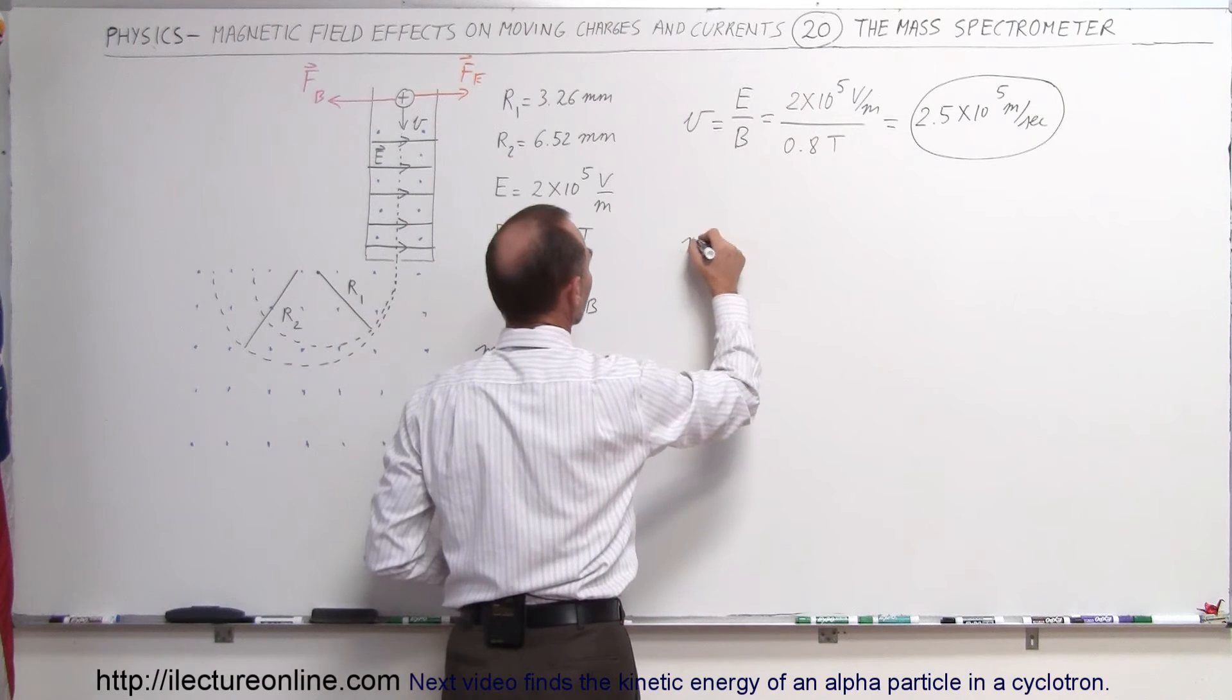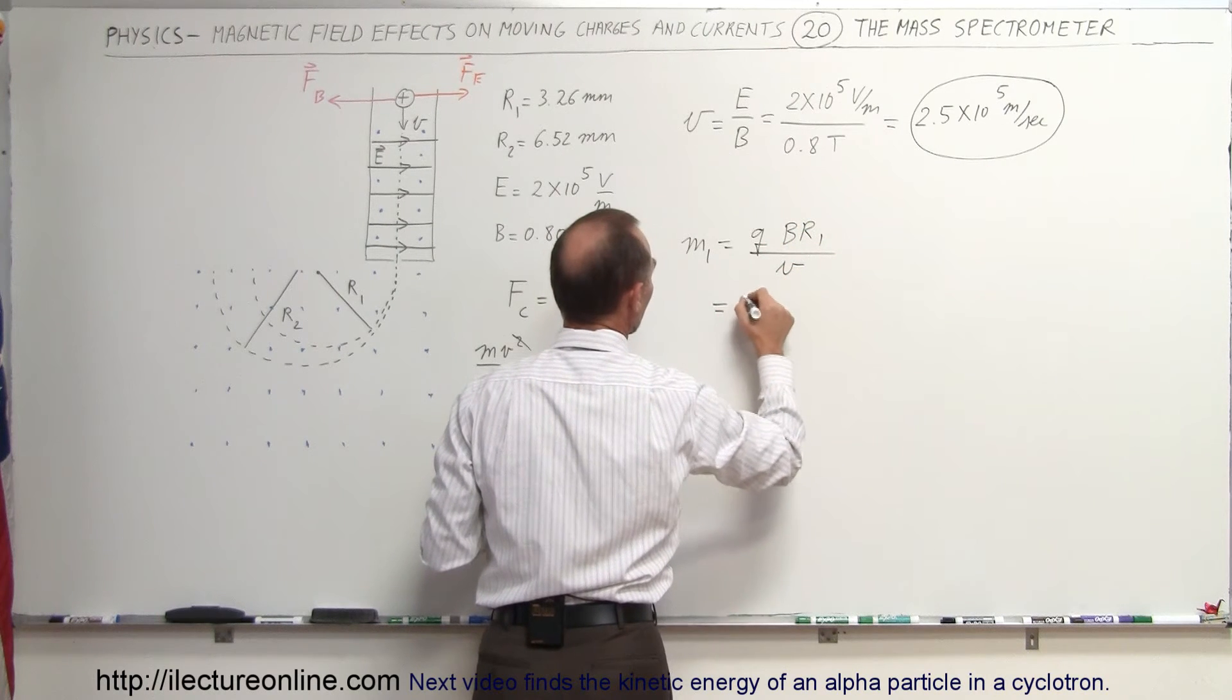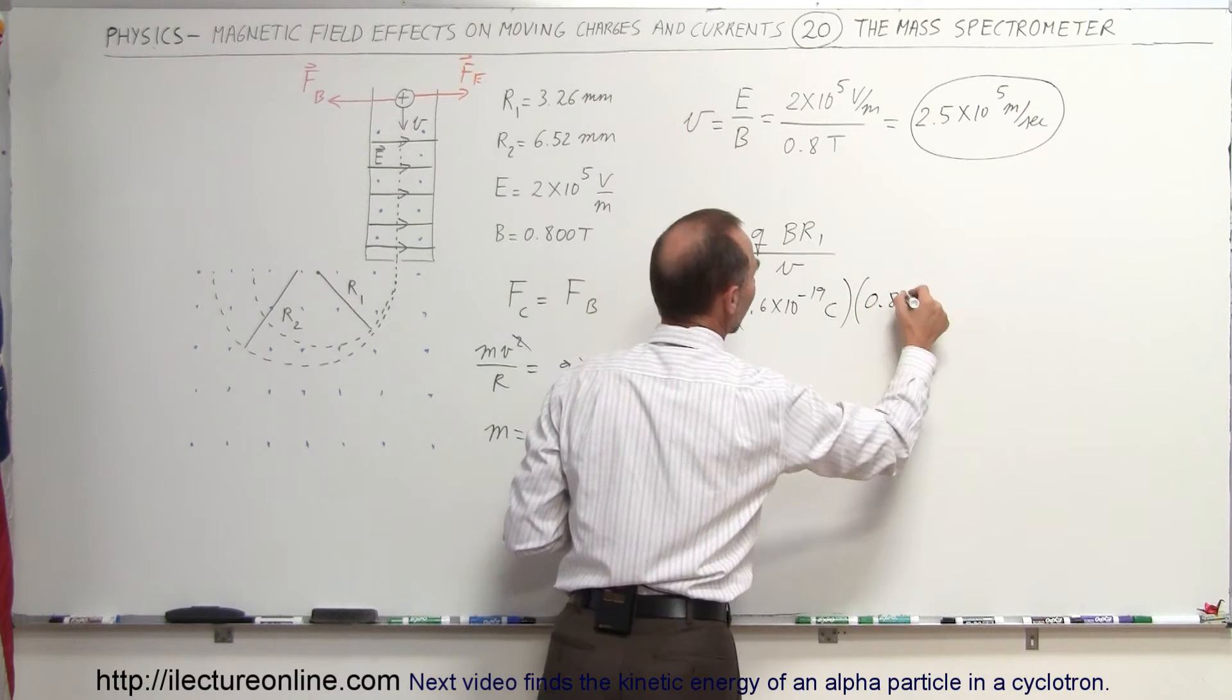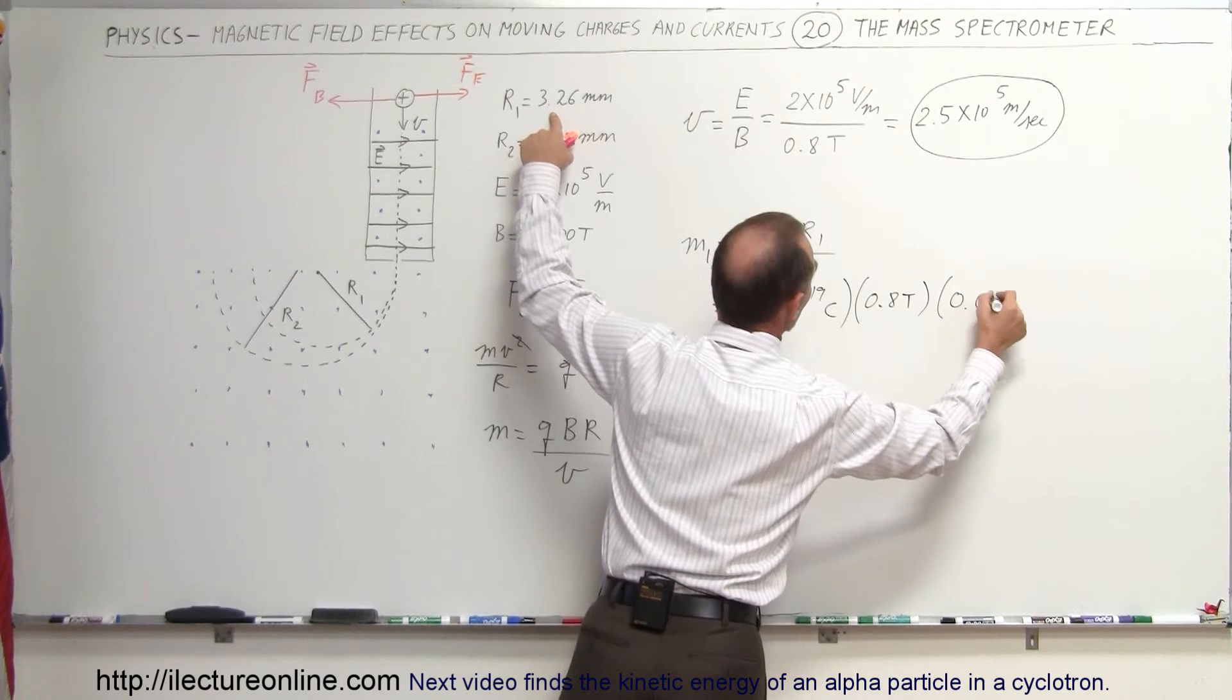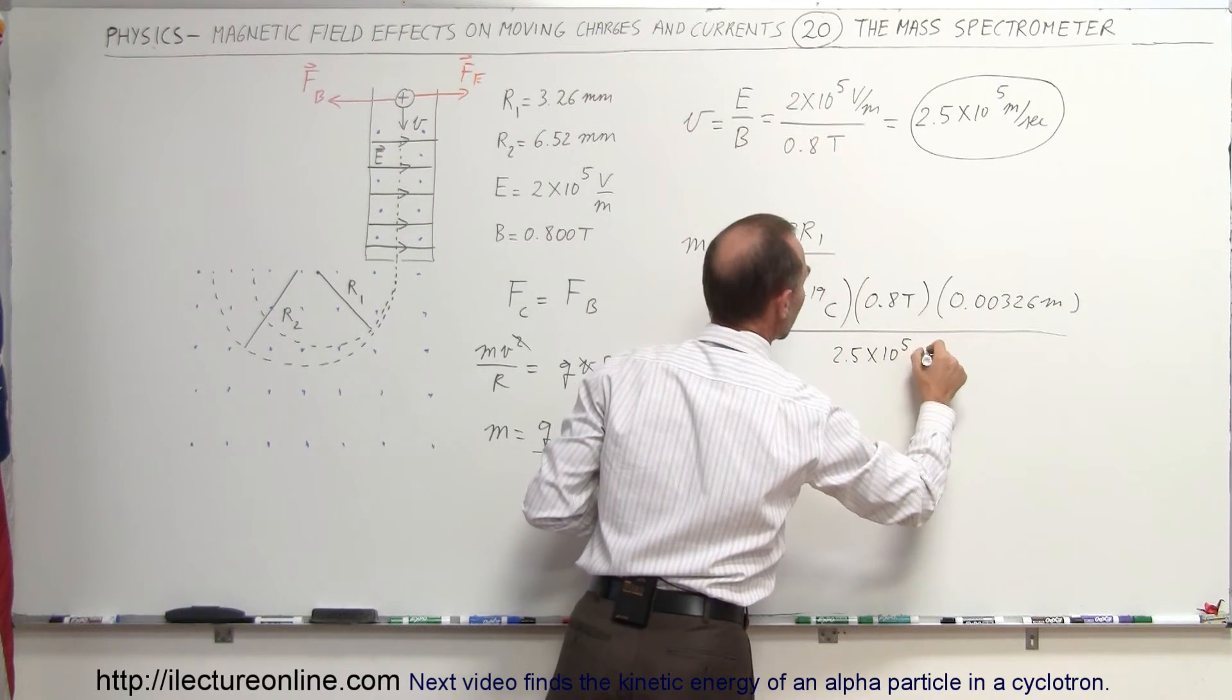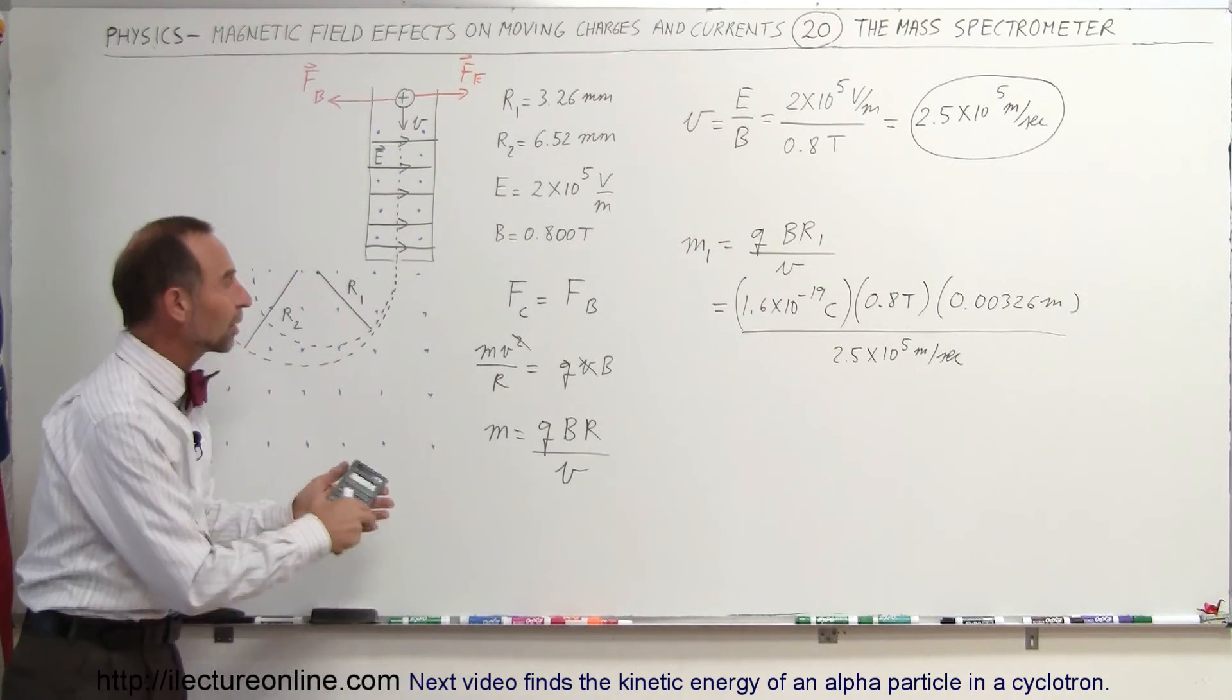So in the case of the first particle, m1, that's equal to qb r1 divided by the velocity. So 1.6 times 10 to the minus 19 coulombs, assuming that those are single charged particles. b is 0.8 teslas. The radius, convert to meters, 0.00326 meters. And the whole thing divided by the velocity, 2.5 times 10 to the fifth meters per second. And so that will allow us to figure out the mass of that particle.